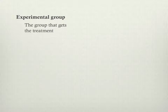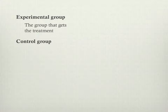This is the group that gets the independent variable — we change the variable to being a vegetarian diet in this group and we see if this has an effect. But we have to have something to compare this to, so we also have a control group.